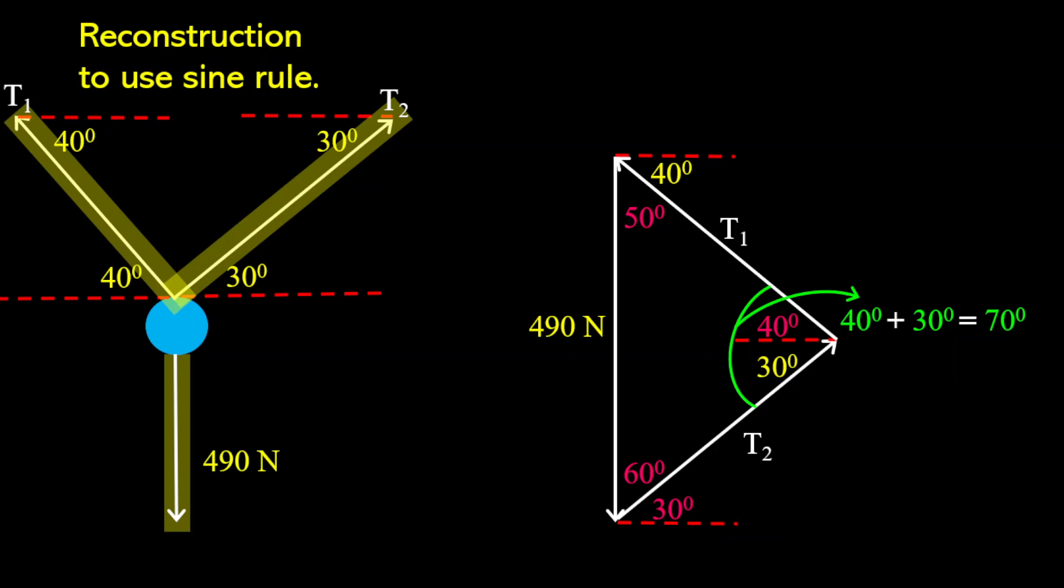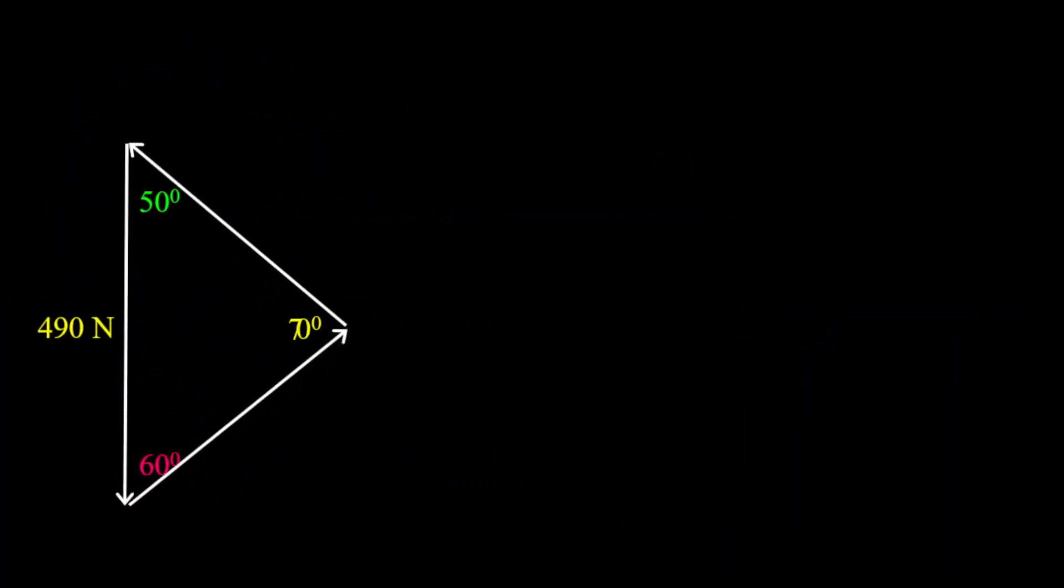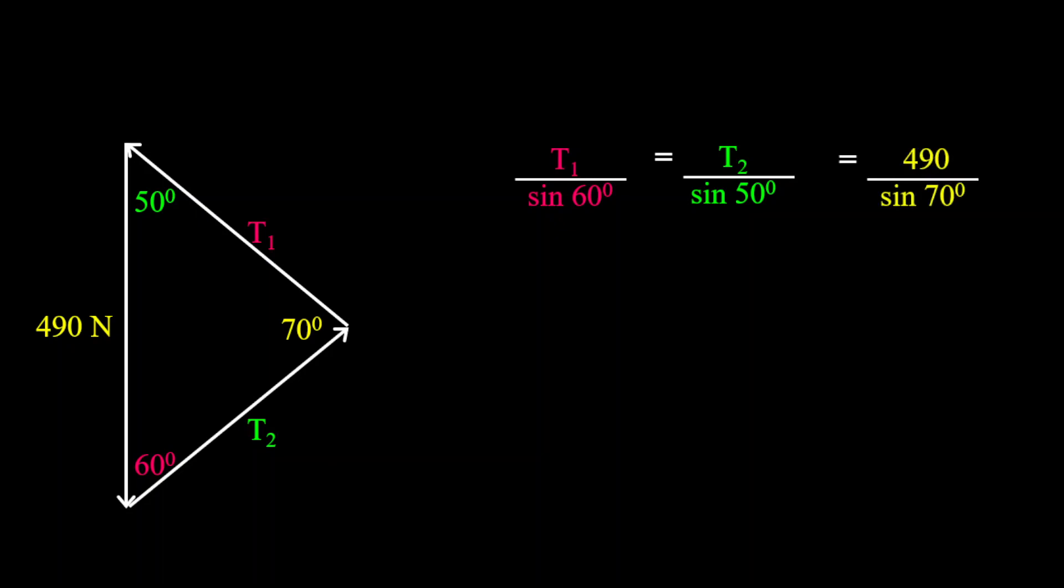Now once we have this, we can now apply our sine rule to it. And so, therefore, T1 is divided by sine 60 degrees, because that side is opposite to the angle of 60 degrees. And it's equal to the opposite side as well, relative to its opposite angle. So therefore, T2 is equal to T2 over sine 50 degrees. And it's also equal to 490 divided by sine 70 degrees.